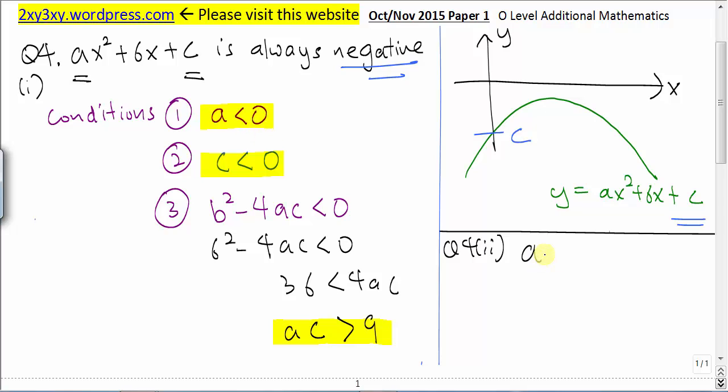So a can be negative 1, negative 2, negative 3. Since we are asked to give only one value, negative 1 will be a very convenient value to start off with.